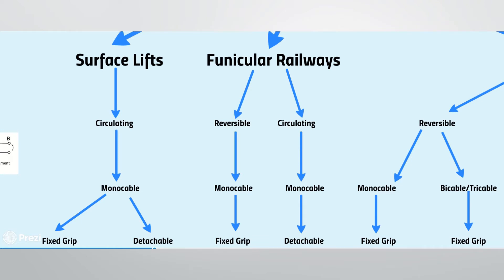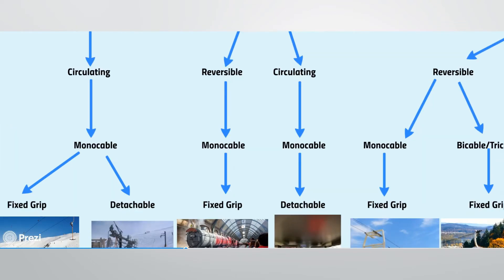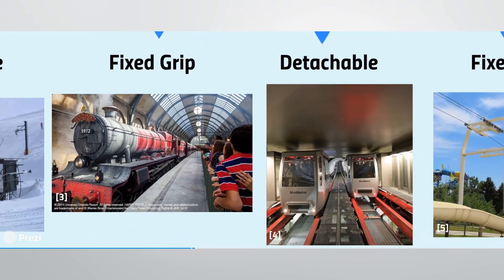Funiculars are commonly associated with European ski resorts, but have a very diverse range of applications. The example reversible funicular on the left is the Hogwarts Express ride at Universal Studios in Florida. Although it was built to mimic the famous train from the Harry Potter franchise, the system is actually a funicular railway. Funiculars are also being used increasingly in airports and for urban transit, like this circulating mono cable system shown in the image on the right in Perugia, Italy.